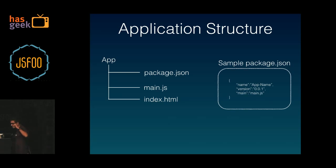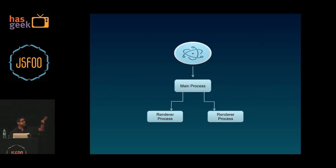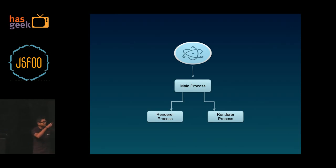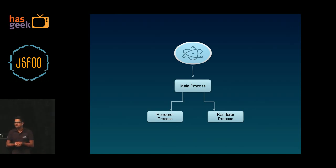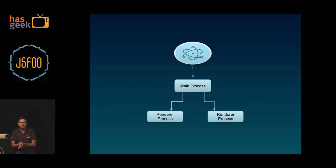The main.js is something called the main process — we'll talk about the main process and the renderer process a little later. This is how a sample Electron application works: you have the Electron binary that loads your main process. The main process in turn renders or loads multiple renderer processes. Each renderer process holds your HTML files that you want to load — you can load multiple HTML files, each inside its own renderer process. Think of it like tabs on your Chrome browser — each tab has its own process.